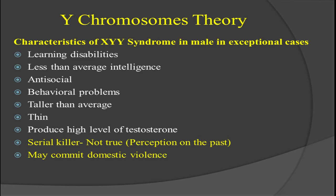Those with XYY syndrome may produce testosterone in quite excessive amounts in their body, and when the amount becomes excessive, abnormalities become visible in the person — such as unusually loud voice or excessive body hair. So this is basically the high secretion of testosterone. Additionally, they tend to be quite aggressive and are often prone to hypertension. There was also a perception that they may be serial killers and may commit domestic violence — but that is not true; it is an outdated perception about super males having an extra Y chromosome.